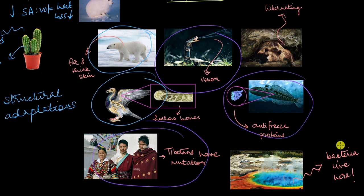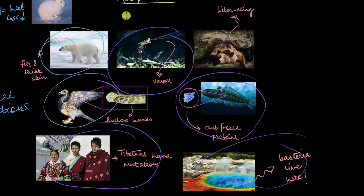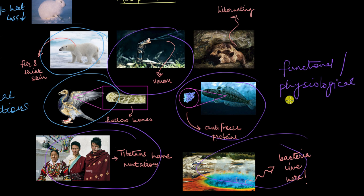So these adaptations, the snake venom, the antifreeze proteins, the Tibetans with the mutations, the bacteria, all of these are altered internal functions of this organism. So you can call these adaptations as functional or you can also call them physiological adaptations. Now why physiological? Because all of these adaptations are talking about internal functions that are being done inside of these organisms. All of the venom, the proteins. So think of it kind of like the release of certain compounds like toxins or venoms or a higher or lesser production of some kind of protein or some other compound. So all of these things are happening as an internal function. So that is why these adaptations are called functional or physiological adaptations.